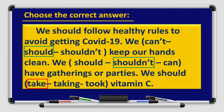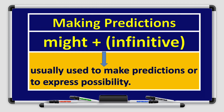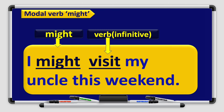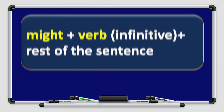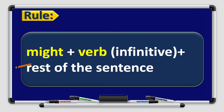Next we have making predictions using might. Might is usually used to make predictions or to express possibility. The rule is: might + verb in the infinitive form. For example: 'I might visit my uncle this weekend.' That means I may or may not — maybe I will go visit my uncle, or I might not. There is a possibility — it may happen or may not happen. After might, we use the verb in the infinitive form.